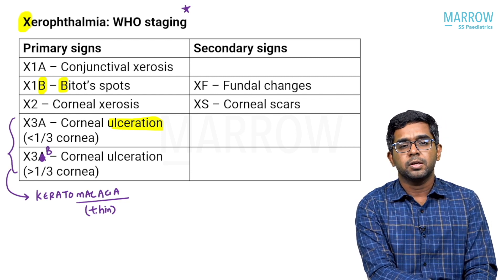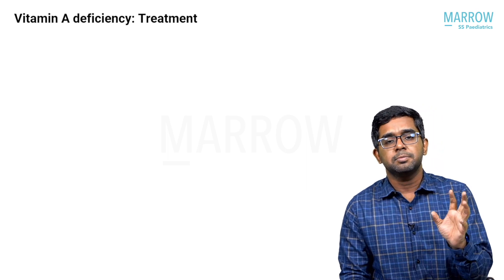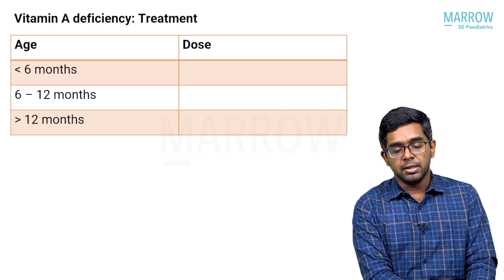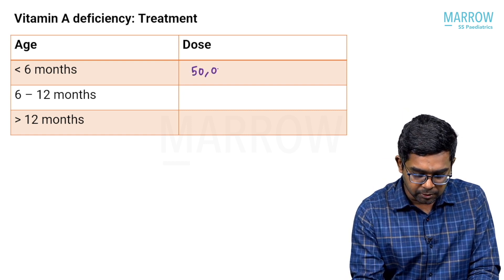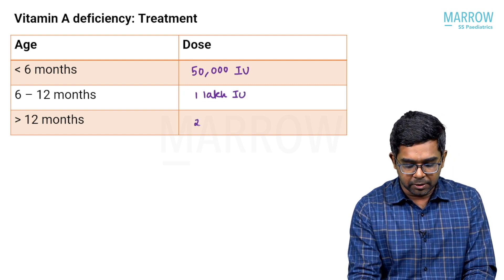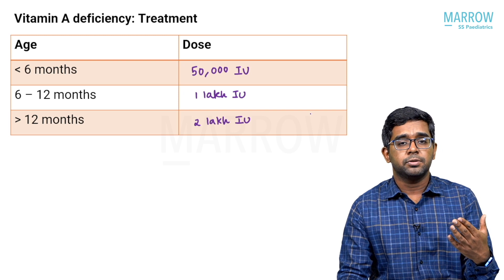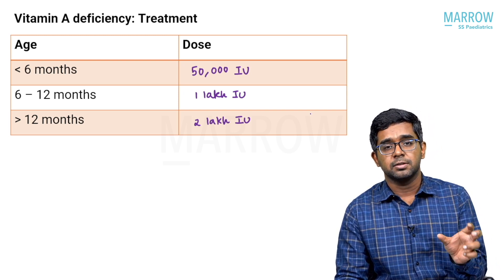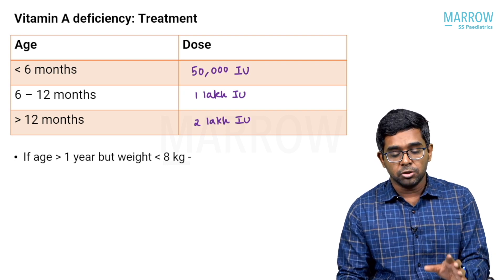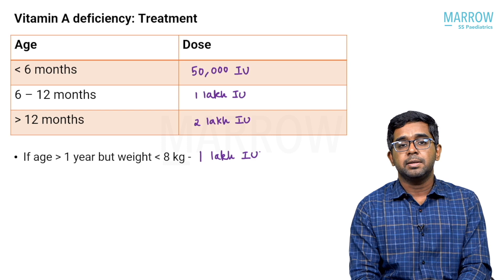Management of vitamin A deficiency uses vitamin A only, and the dose is dependent on the age of the child. For children less than 6 months: 50,000 international units. For 6 to 12 months: 1 lakh international units. For more than 12 months: 2 lakh international units. In children with severe malnutrition where weight is less than 8 kg despite being over one year, the dose is 1 lakh international units.